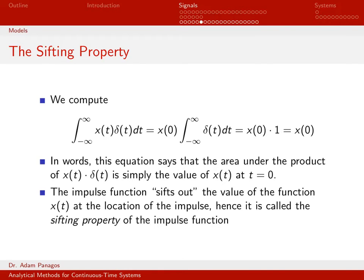Now that we know how to multiply a continuous time signal times an impulse function, we can talk about a very important property of the impulse function, namely what we call the sifting property.